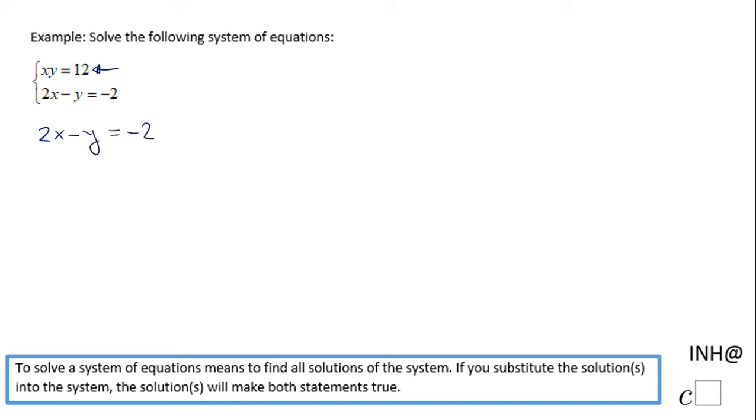If I want to solve for y, I'm going to subtract 2x. I'm going to have negative y equals negative 2x minus 2. Then you simply multiply by negative 1 or switch the sign. So this is the second equation in y form.